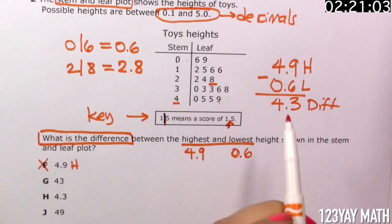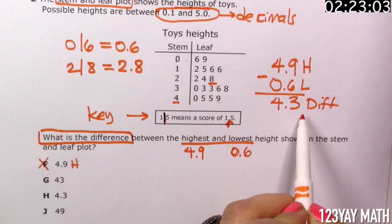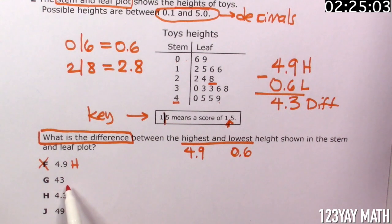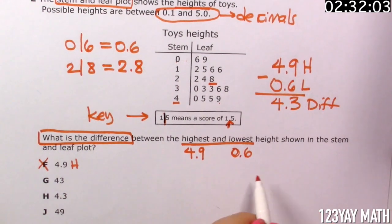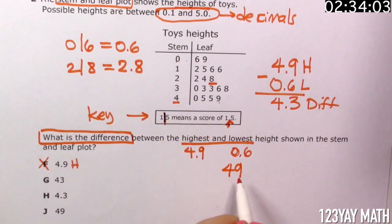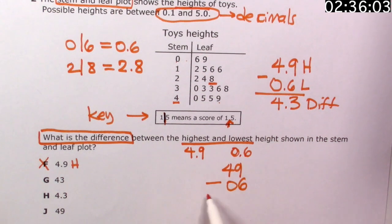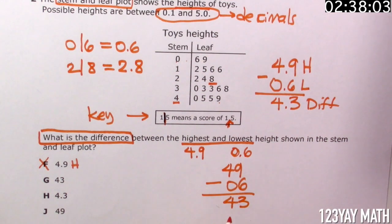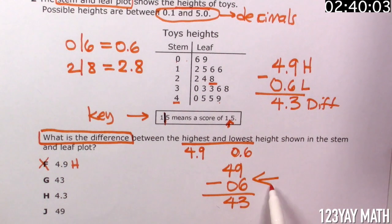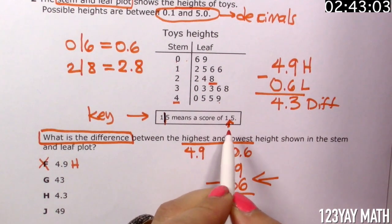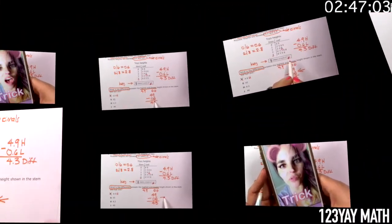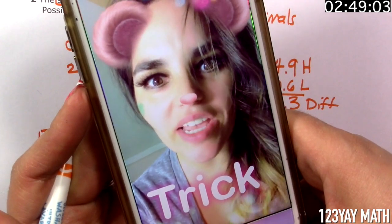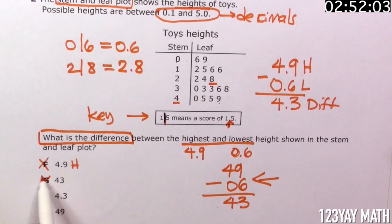What about 43? I see a 4.3 here. If somebody didn't look at the key and instead of saying that these are decimals, they did 49 minus 6, that is 43. But this is without decimal points. That is why it's so important to look at this key. So, do we choose 43? Oh, another trick! Unbelievable! Definitely not.